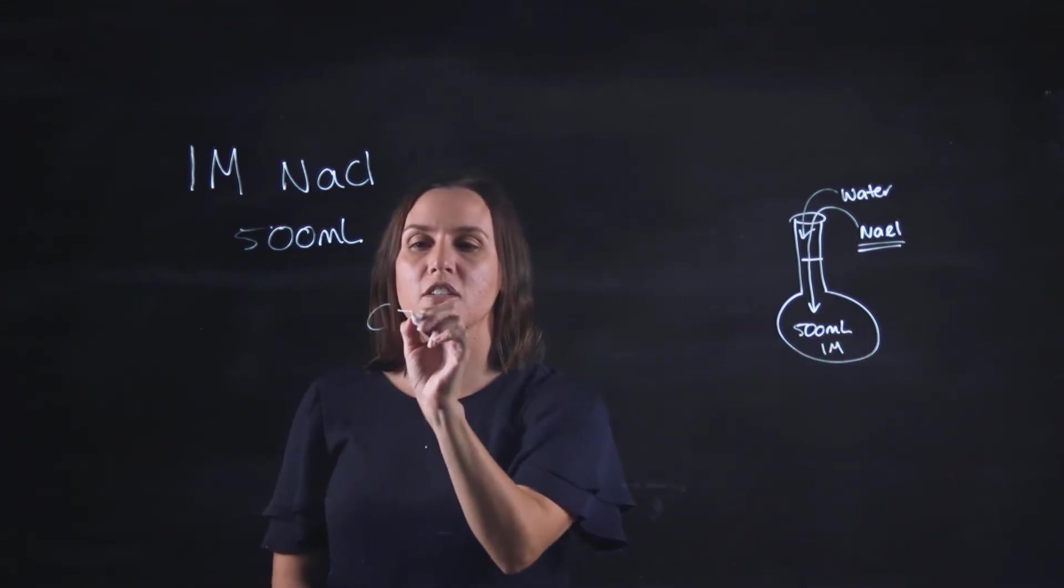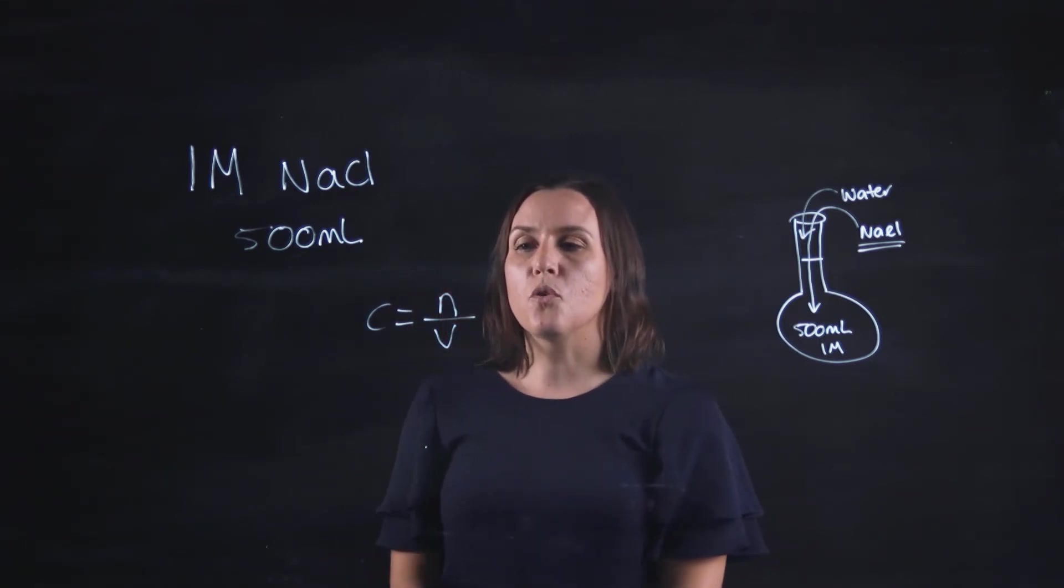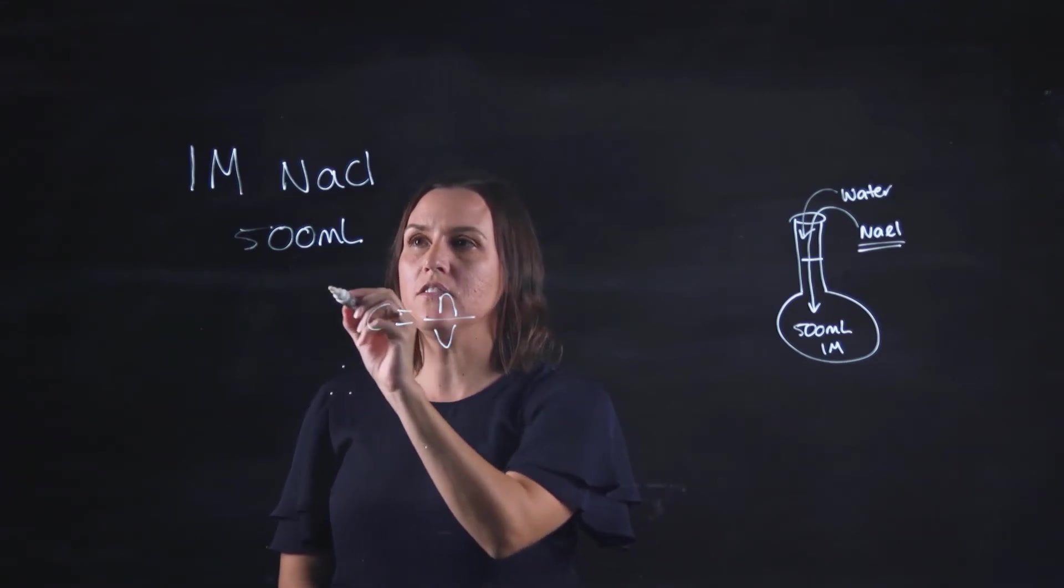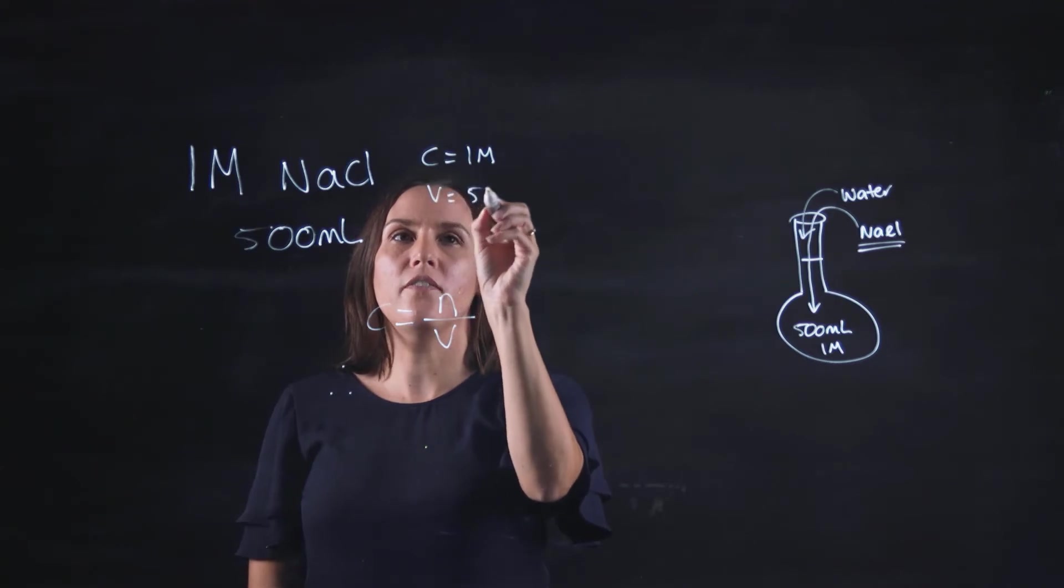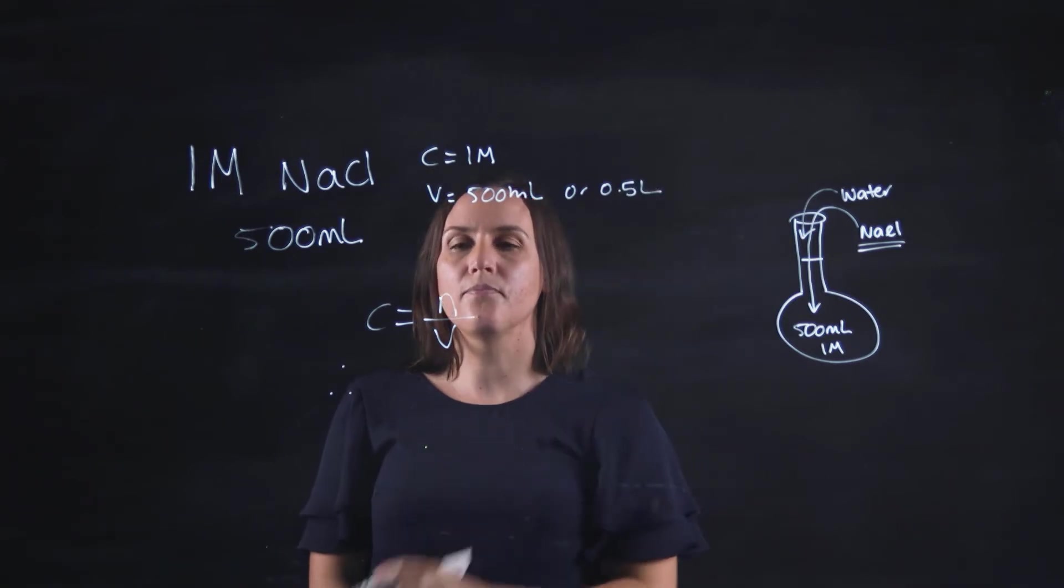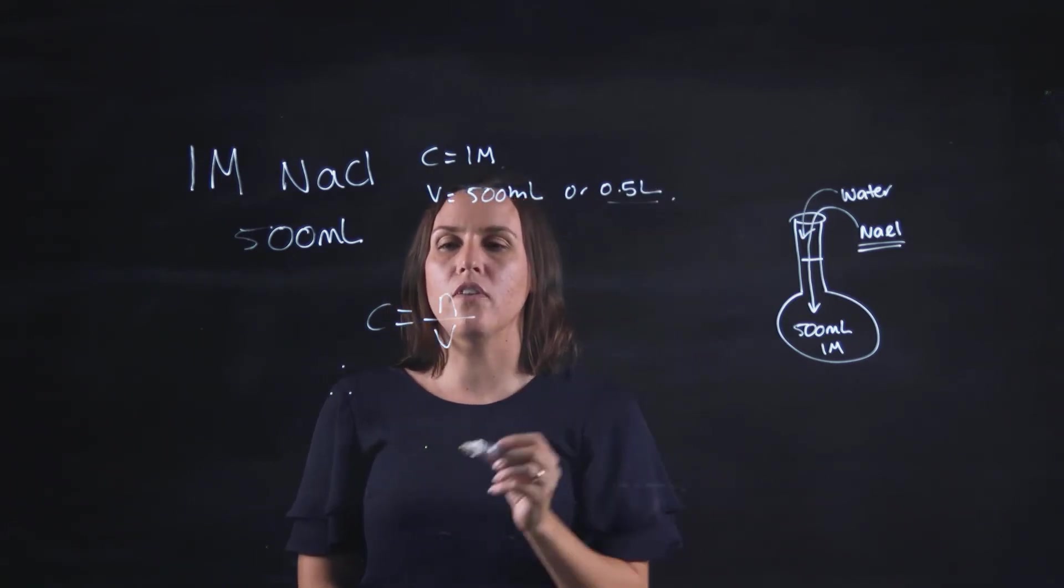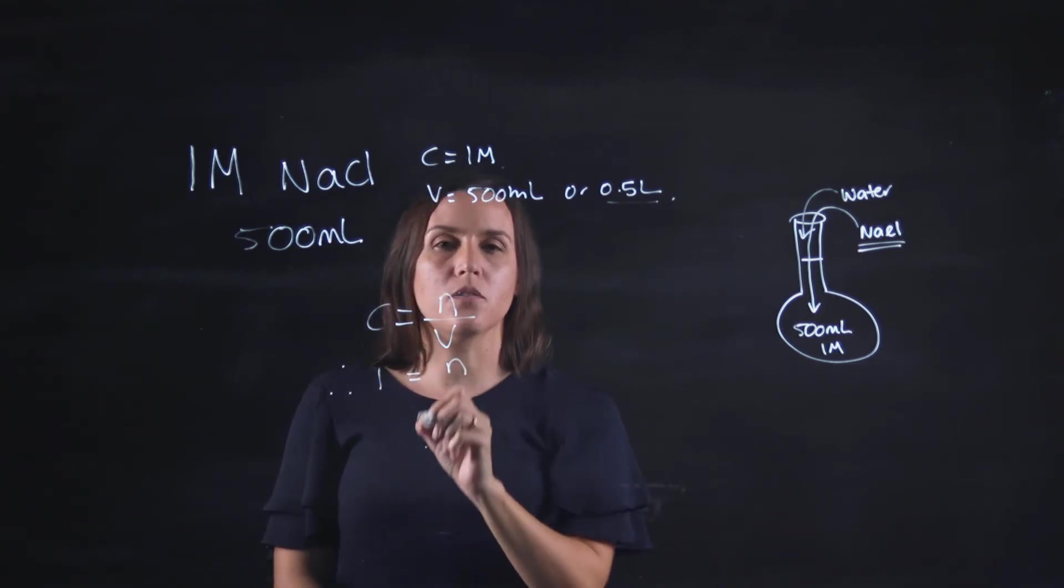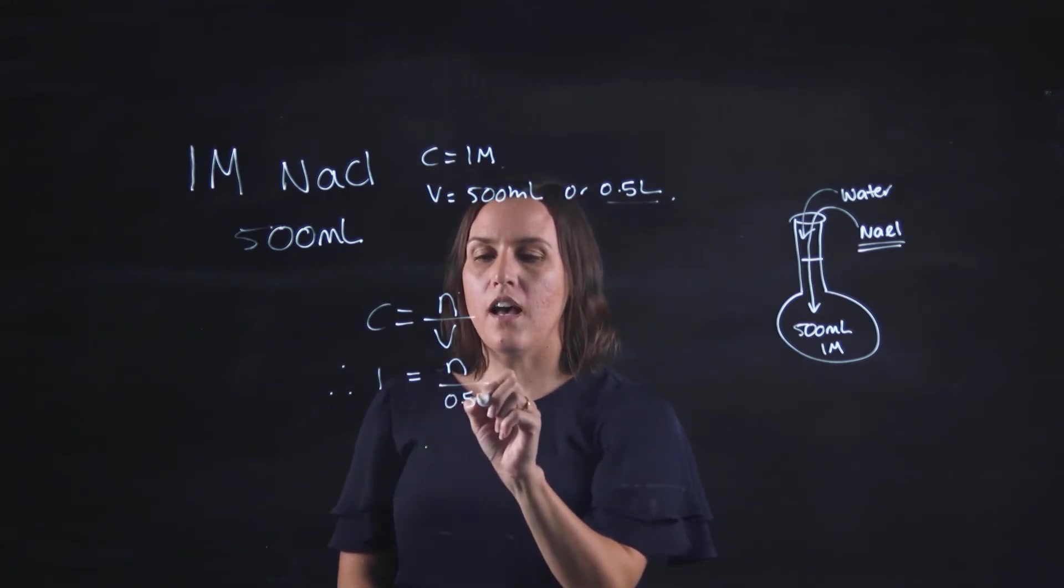So I'll do concentration equals the number of moles divided by the volume to work out the number of moles. So therefore my concentration equals one molar, my volume equals 500 mils or 0.5 litres. So because I've got moles per litre I would need to use that 0.5. So my one molar equals my number of moles which I'm trying to determine from this equation and 0.5 litres.